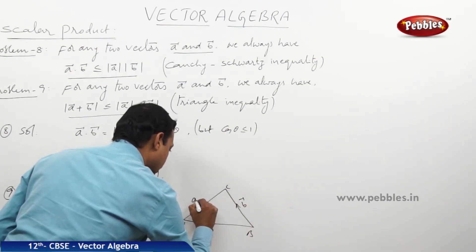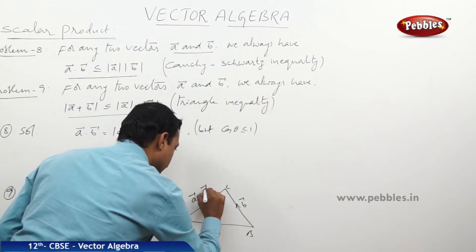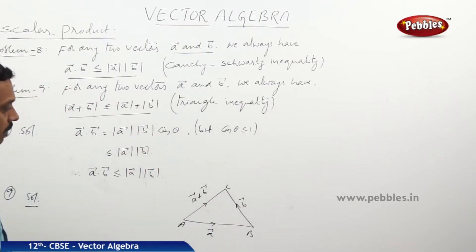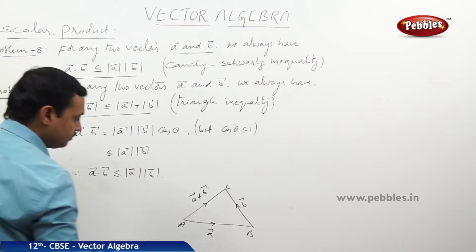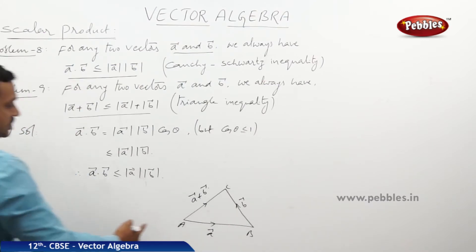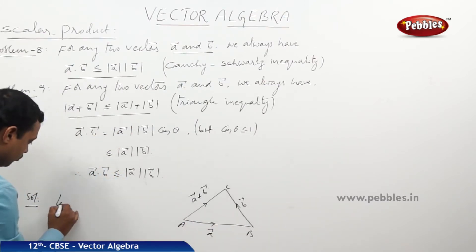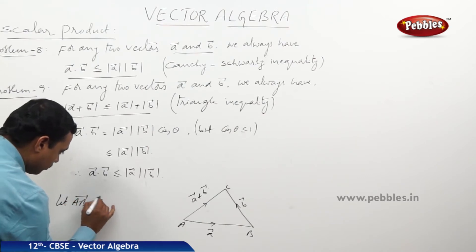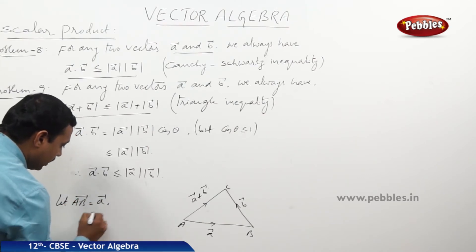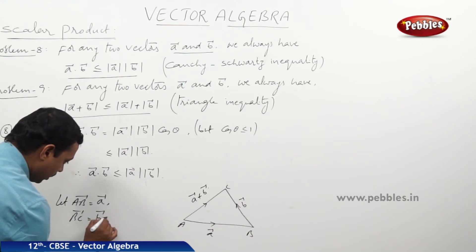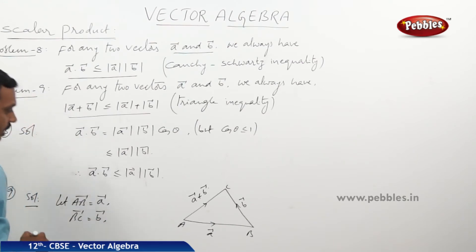By the law of triangle addition, AC = a + b. Let AB = a and BC = b. Then AC = a + b.